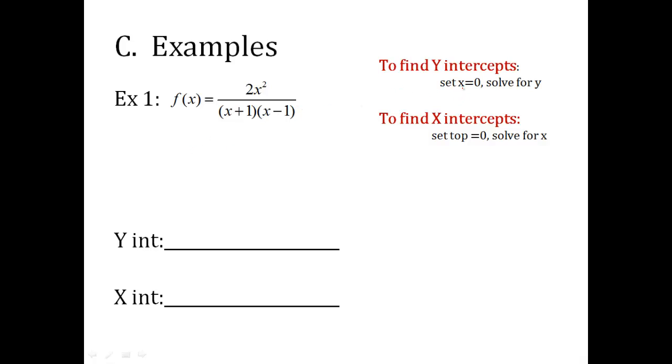Now I do y-intercepts. Set every x equal to 0. So 2 times 0 squared over 0 plus 1 times 0 minus 1. Well, that's just 0 over 1 times negative 1, but 0 over anything is 0. So remember, this is my y-value. So then my y-intercept is 0, 0.